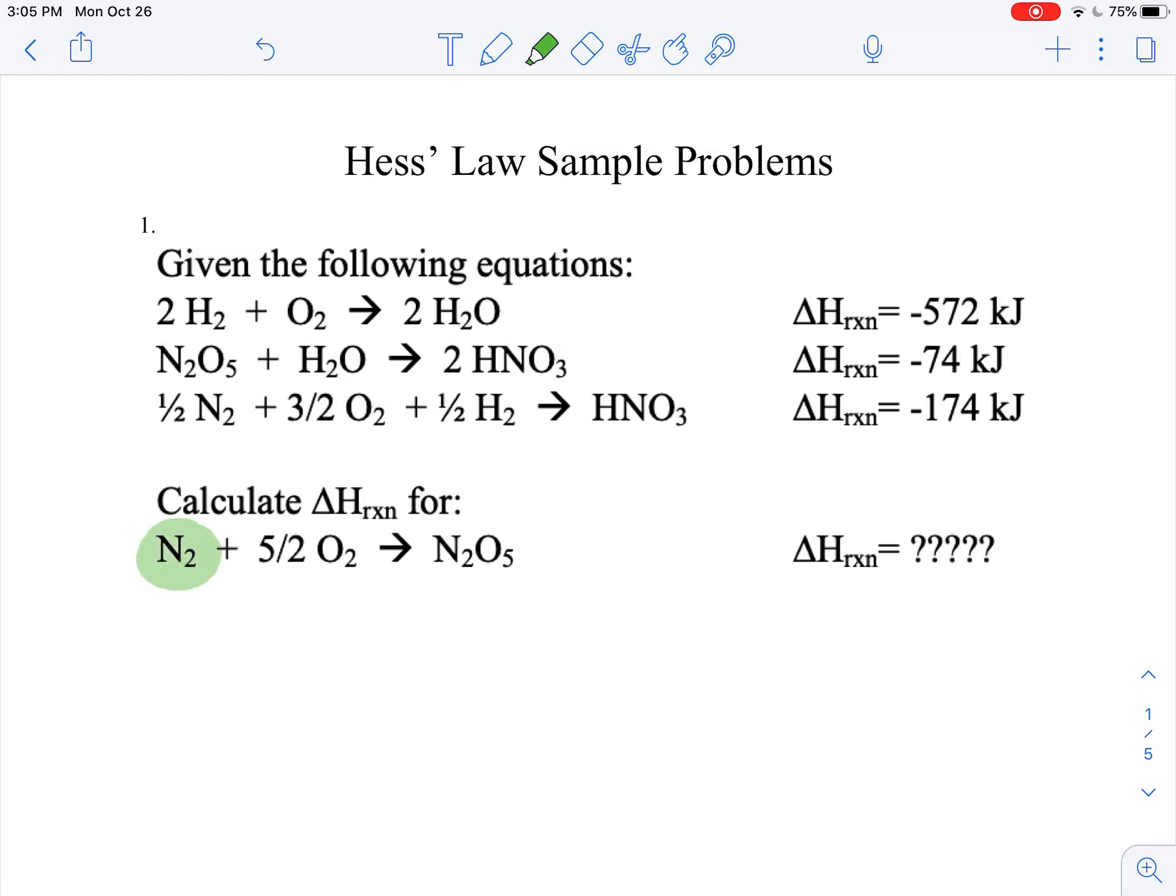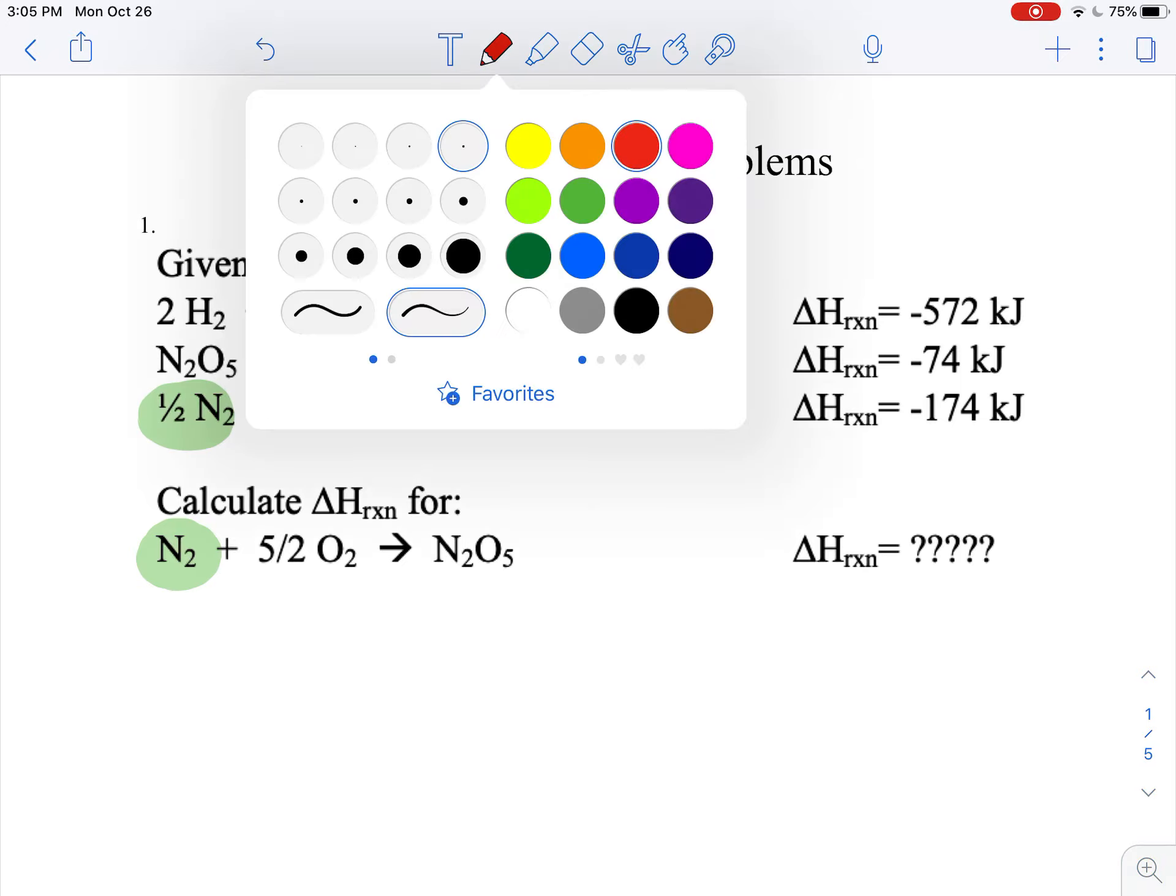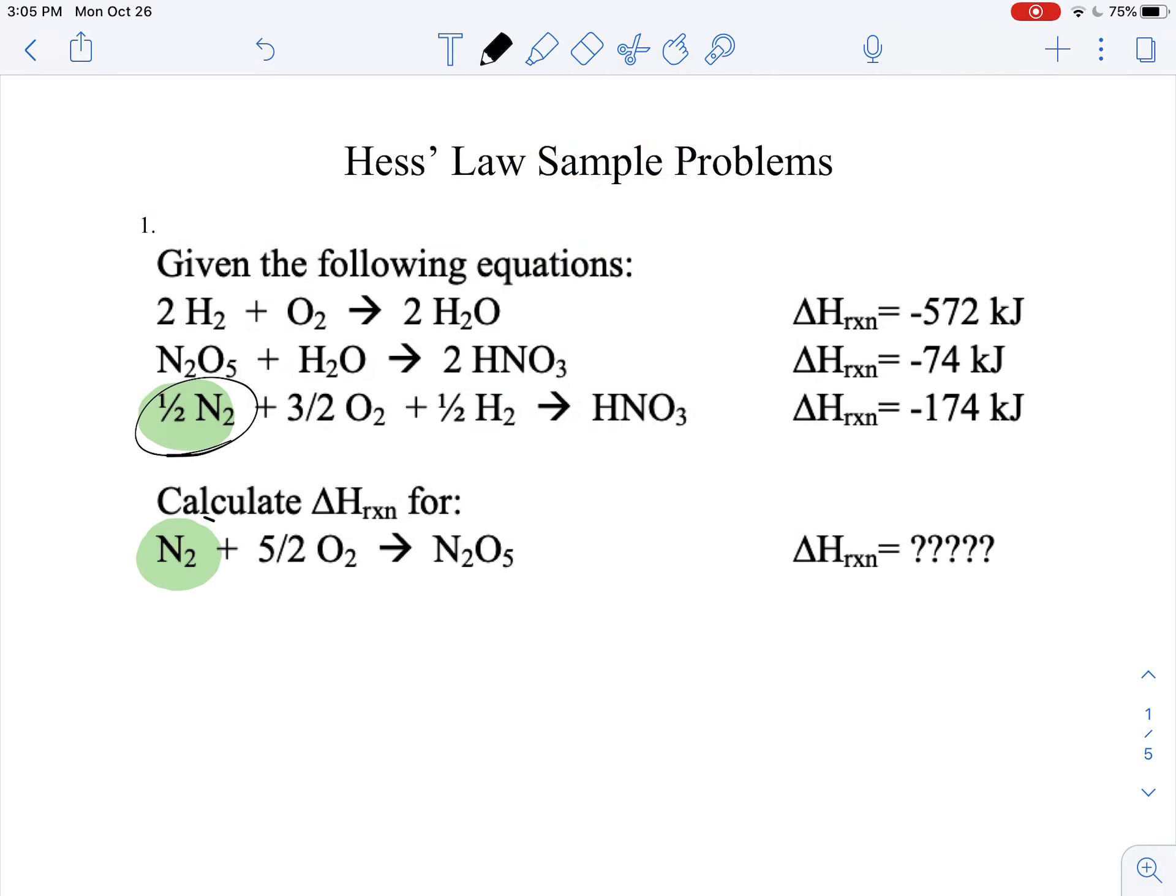Now the only place that nitrogen exists in any of these three equations is our last equation, their equation number three. So consequently, because it's the only place that it exists, I know good and well what I have to do with equation three. I need nitrogen to be on the left-hand side here because it's on the left side of the arrow down here, and it is, except I need one mole of it apparently, and right now I only have a half a mole.